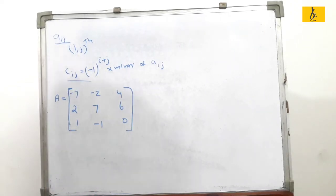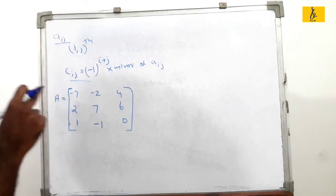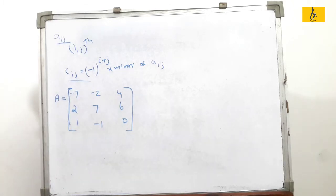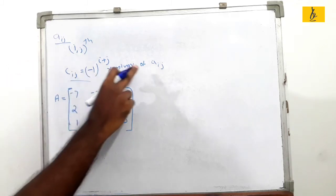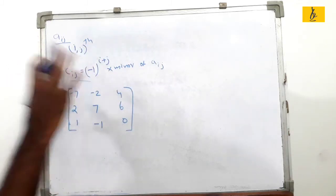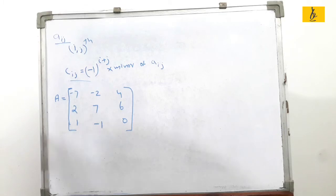This is the cofactor matrix. C_ij is the cofactor. The cofactor formula is: minus 1 raised to i plus j, into the minor of A_ij. We will try to compute this cofactor.